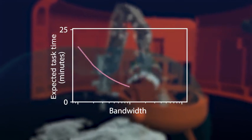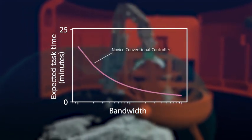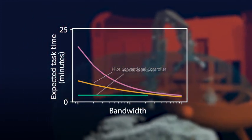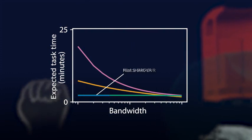For both novices and trained pilots, conventional controller performance deteriorates exponentially with decreasing bandwidth. In contrast, both groups perform well with SHARC, regardless of bandwidth.